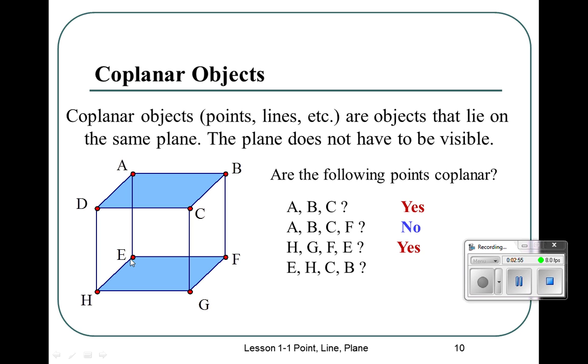E, H, C, B. Okay, we have four points again. E, H, and C, B. Those are on two different lines. Okay, so they do make a plane. Any three non-collinear points?